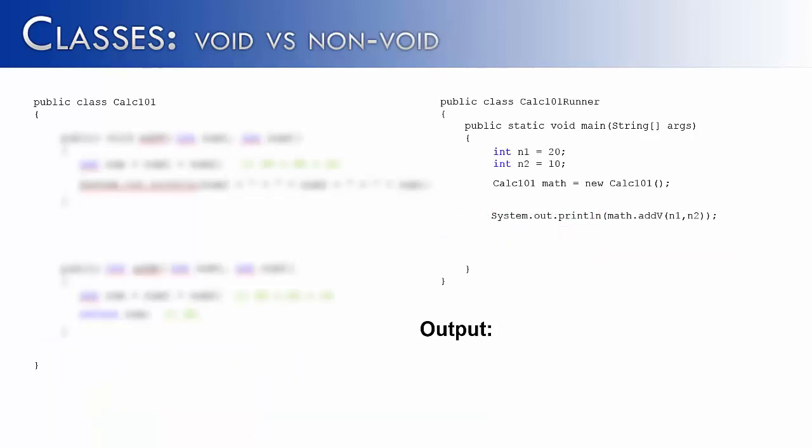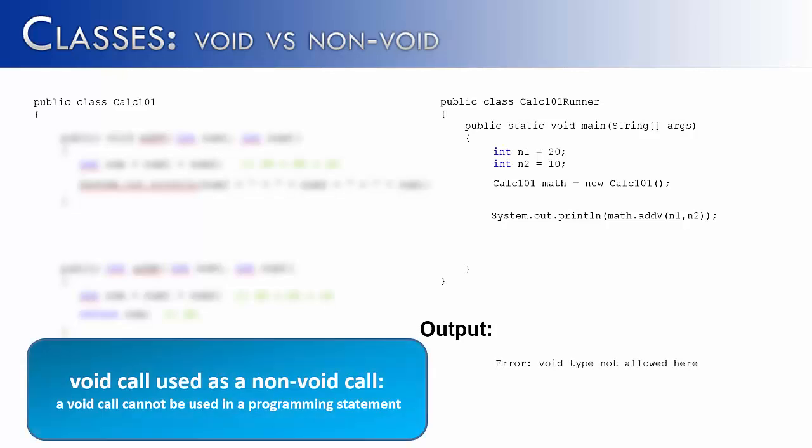What if we were to take addV and use it like a non-void method? And that is, put it in some kind of programming statement. And that's exactly what I've done right here. I said math.addV n1 comma n2. If we tried to run this right now, it would give us an error, and it would say something like, error, void type not allowed here.